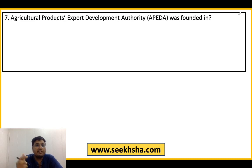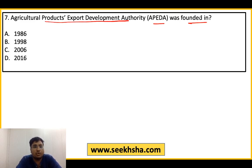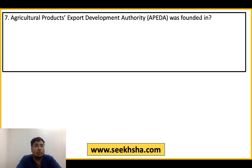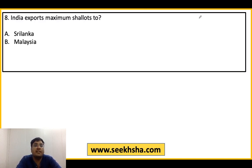Next question: Agriculture Products Export Development Authority (APEDA) — इसकी foundation किस साल में हुई थी? Options: 1986, 1998, 2006, 2016, None of the above. यह एक बहुत ही factual question है — APEDA अक्सर news में रहता है। The right answer is Option A: 1986 — Agriculture Products Export Development Authority की foundation 1986 में हुई थी।